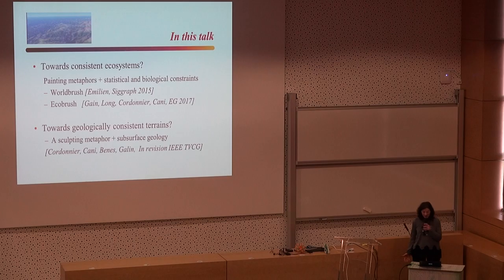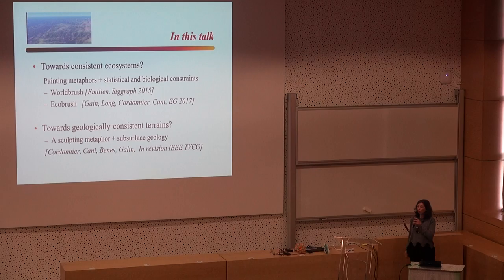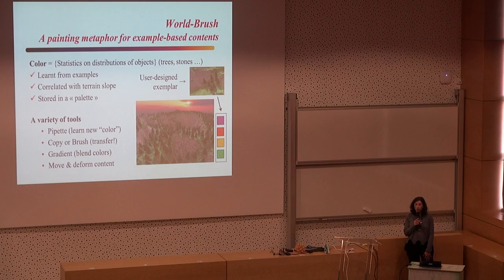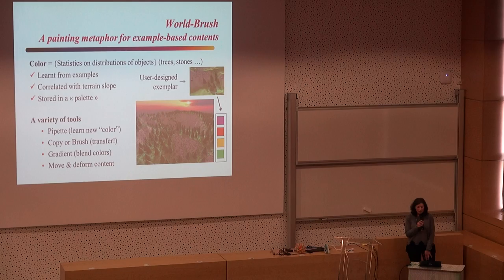So what I will present in this talk are two parts. First, how can we design with expressive control consistent ecosystems? And secondly, how can you define, with expressive user control, geologically consistent terrains? These are more recent works. The first work I will present is EcoBrush, derived from a paper we had in 2005 called World Brush, so I will remind you what World Brush is before describing EcoBrush. I'll also present a work that has not been published yet but is in revision — so this is an opportunity to present it.